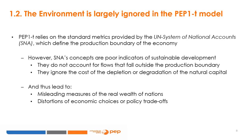Despite the fundamental role that natural capital plays in determining a country's economic wealth, it is largely ignored in the PEP-T model. As a CGE analysis, the PEP-T model relies mainly on standard metrics of economic performance provided by the system of national accounts of the United Nations. The SNA's concepts define the production boundary of the economy. However, they are limited and ultimately poor indicators of sustainable development or well-being. They do not account for flows that fall outside the production boundary, such as the ability of natural capital to provide non-marketed ecosystem services, and they also ignore the cost of depletion or degradation of environmental resources.